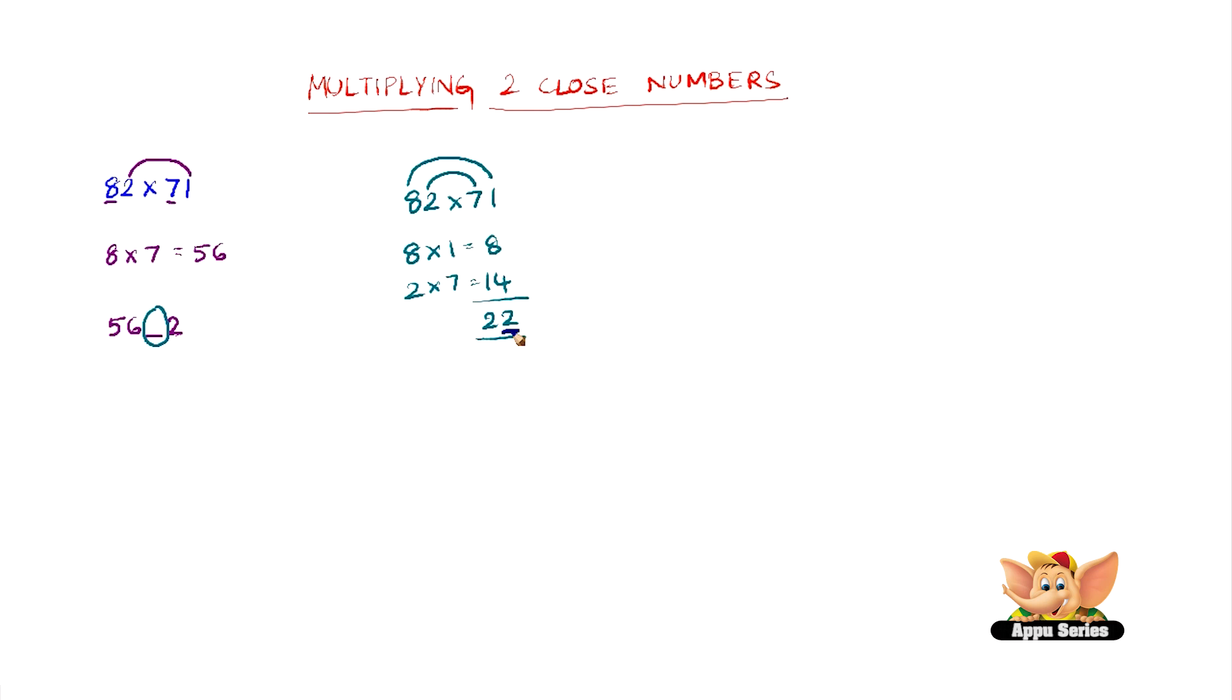Consider the units digit of 22 and place that here in the blank space that we've left, and the tens digit which is a 2 again we have to take it over to the next number and add it. So that makes it 56 plus 2 is 58, 2 remains 2, so 5822 is the answer of 82 into 71.